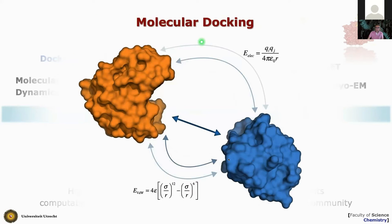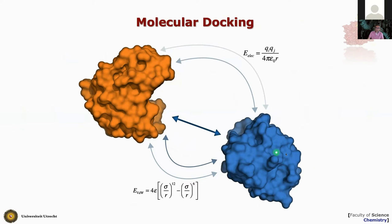Molecular docking in a nutshell: given the structure of the components of a complex — in this case a binary complex of two proteins — can we predict how those associate? This requires searching a six-dimensional space if the molecules are considered rigid, because you can fix one molecule at the origin and then sample all possible rotations and translations of the second molecule around the first. Of course, many complexes consist of more than two molecules, so you also need to model larger assemblies, and not all docking software can handle more than two molecules.